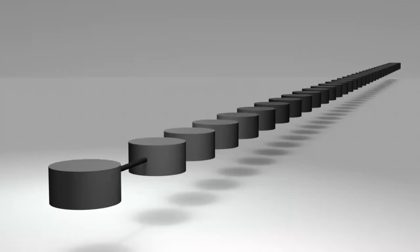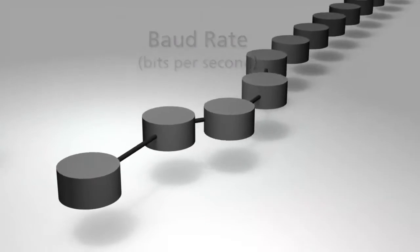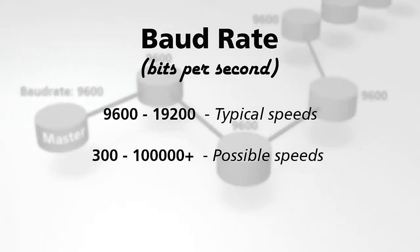The speed that Modbus messages are sent at is referred to as the baud rate, or bits per second. All devices on an RTU network must use the same baud rate. Different devices support different transmission speeds, but between 9,600 and 19,200 bits per second is a typical range. Modbus modules can be configured from as low as 300 to as high as over 100,000.